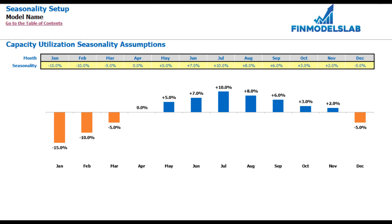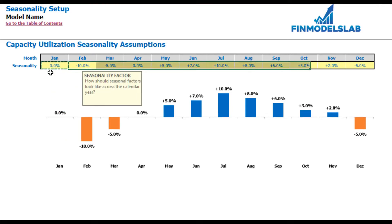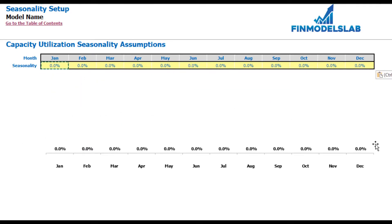On the seasonality tab you can set up your capacity utilization seasonality assumptions across the months. The dashboard previously set up the average capacity utilization by year, and here you may adjust it for different months. Minus 10% means that if you have 50% average capacity utilization, you multiply by 0.9 to get 45% for February. Plus 10% means you multiply by 1.1 to get 55% for July. If you don't need seasonality, put zero across all months for a flat result.